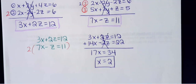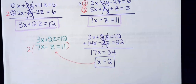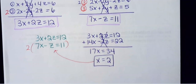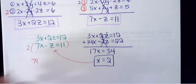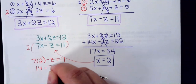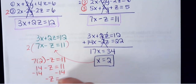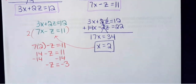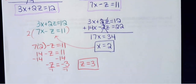Once you have one variable, back up one step and find the other. I had x and z, so I'll plug x equals 2 into the equation 7x minus z equals 11: 7 times 2 is 14, so 14 minus z equals 11. Subtracting 14 gives negative z equals negative 3, so z equals positive 3.